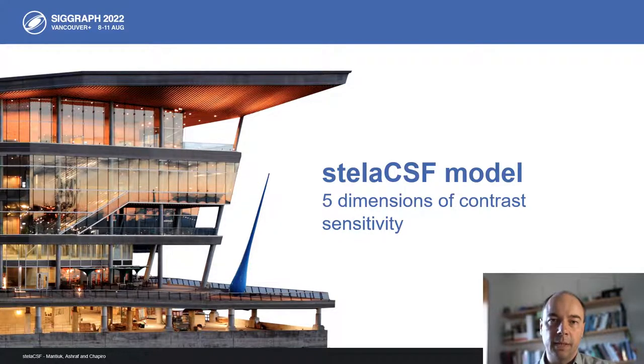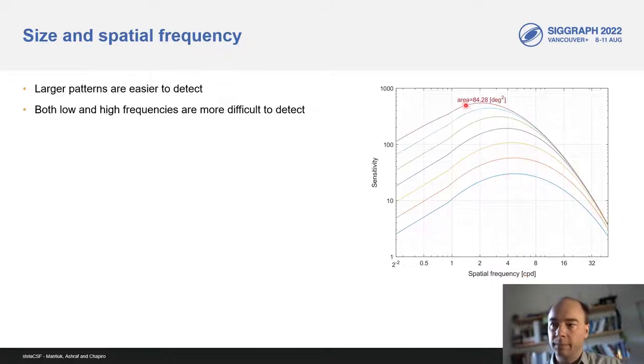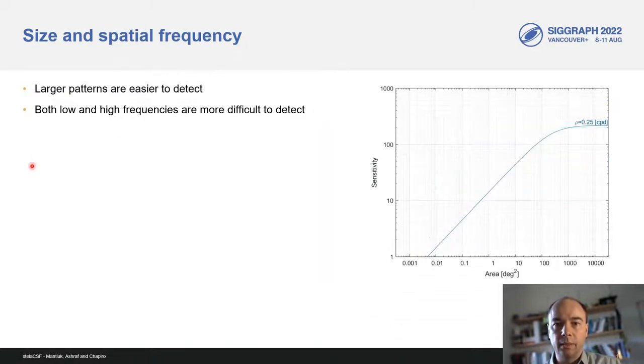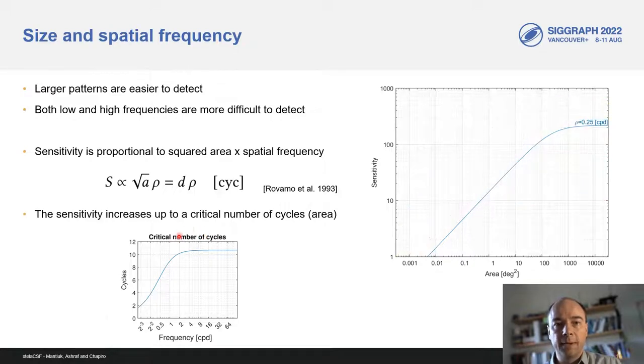So, how does Stella CSF model the five dimensions of contrast sensitivity? In the next few slides, I will focus on the most interesting relations in the contrast sensitivity space and how they are modeled. It's rather obvious that larger patterns are easier to detect, so the sensitivity grows with the area. The sensitivity drops at both low and high spatial frequencies. However, the frequency of the peak depends on the area of the pattern. If we look at CSF as a function of area, we can observe that the sensitivity increases with the square root of the area, the relation that was reported by Rovamo. The sensitivity increases only up to a certain level known as the critical area. The critical area varies with the spatial frequency.